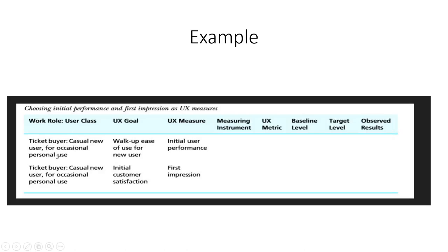Here is the example. In this example, there is a ticket buyer as the work role. The ticket buyer is a new user trying to use the ticket chaos system. The UX goal set up is ease of use for new user. To achieve this goal, the measure we are going to see is the initial performance of the user. The second goal is initial customer satisfaction, and for that we are going to measure by the first impression. Initial performance is an objective measure, and first impression is a subjective measure.